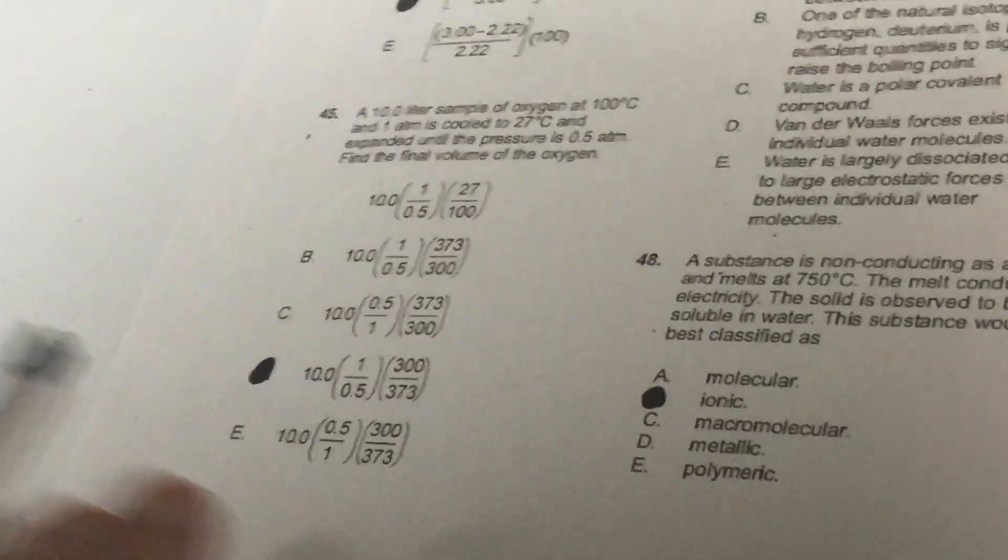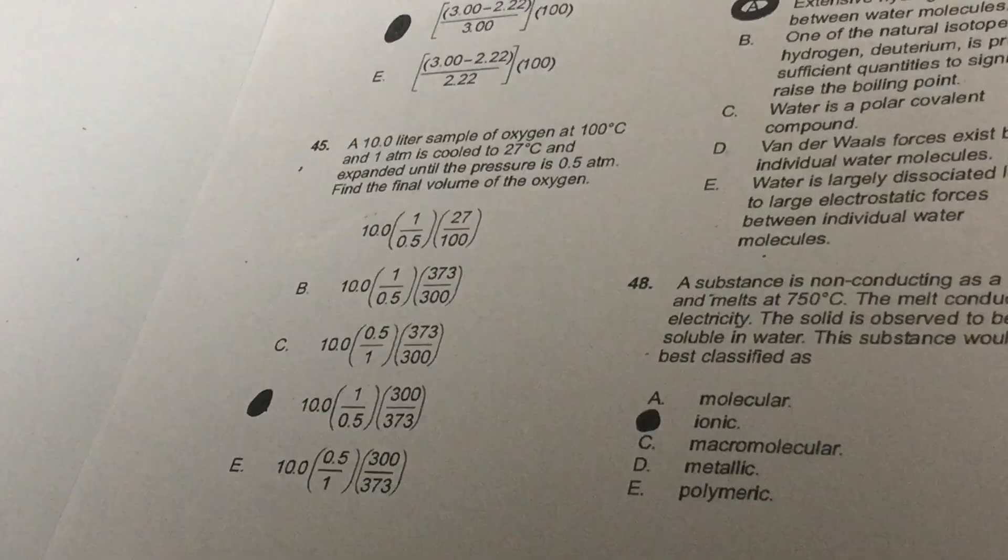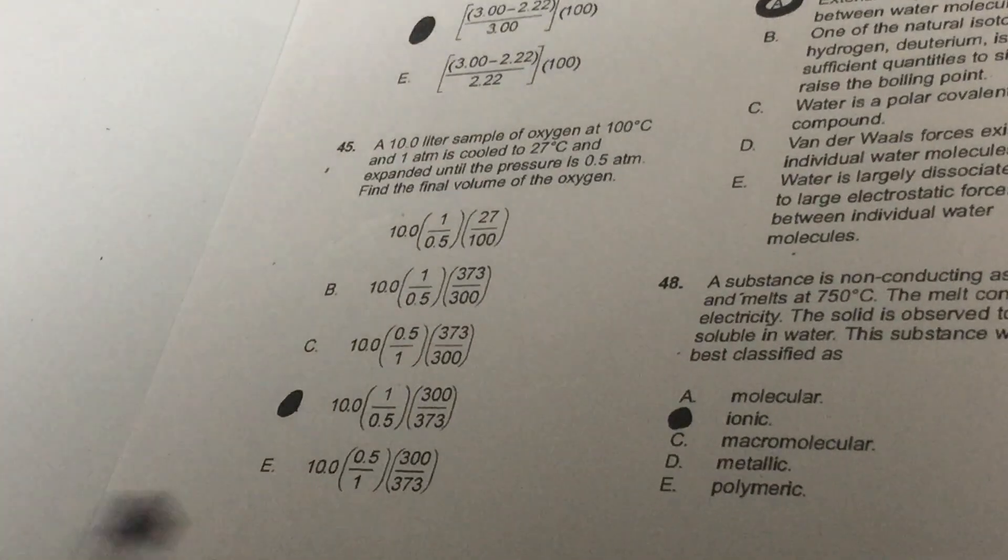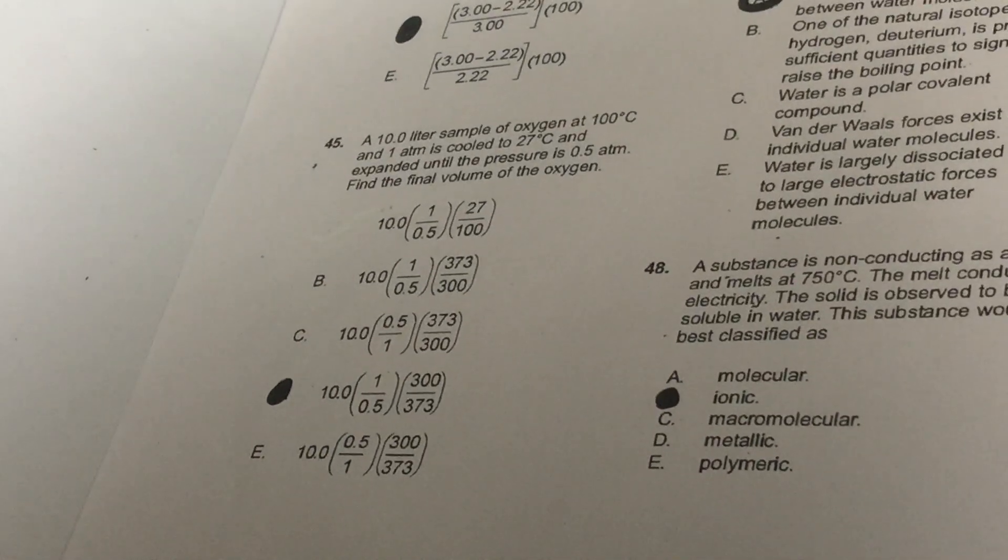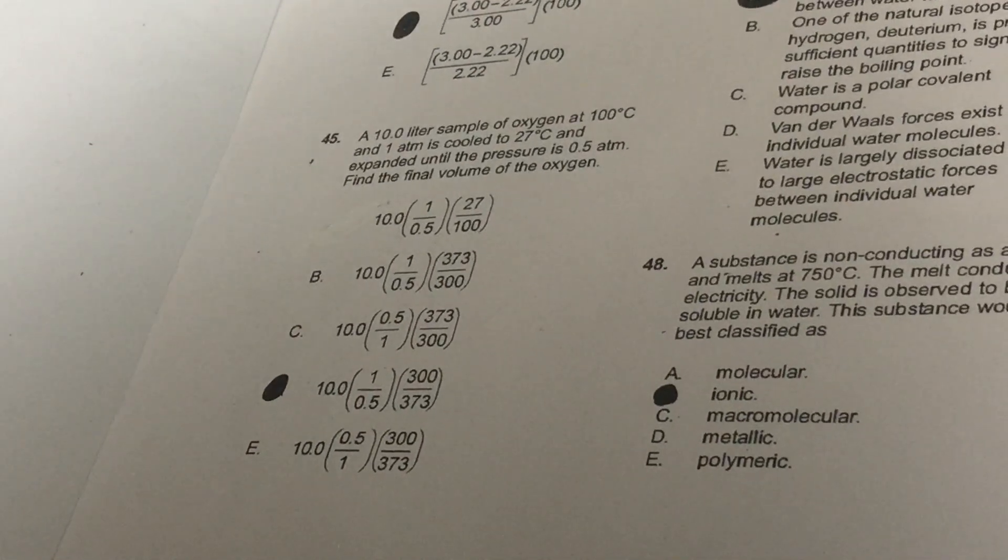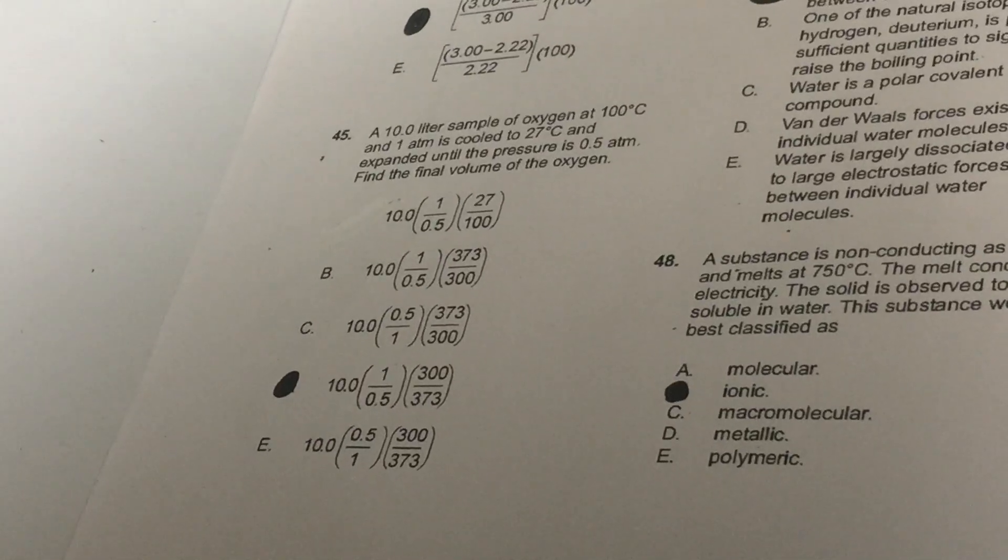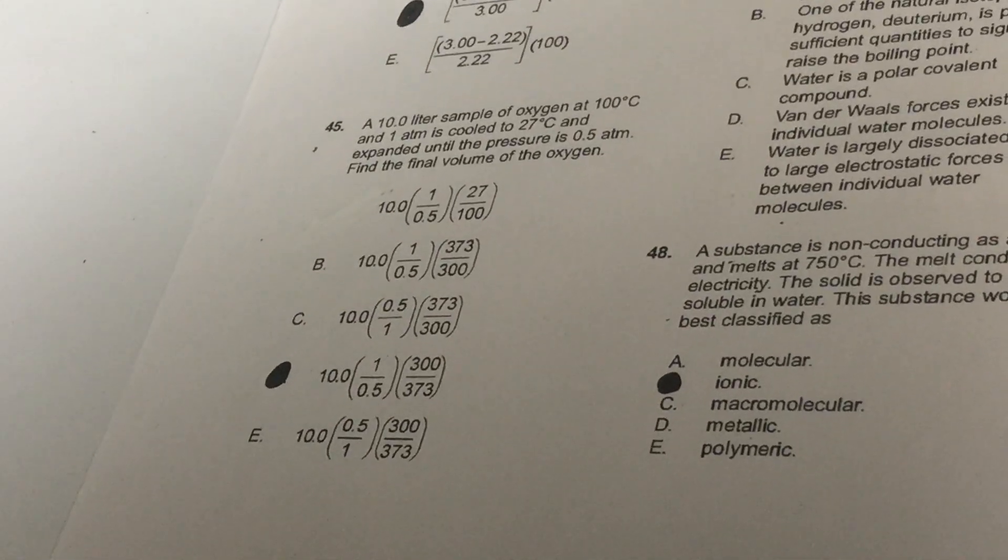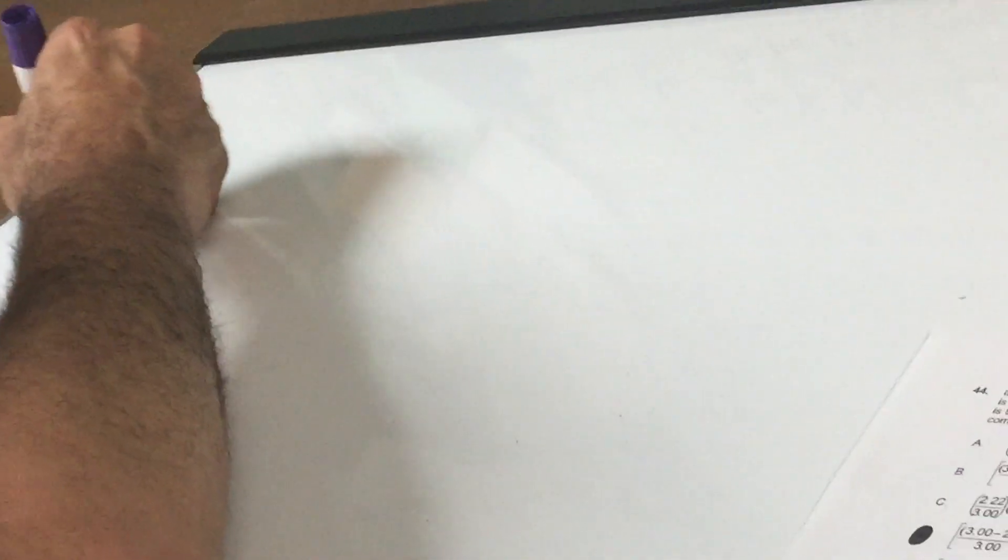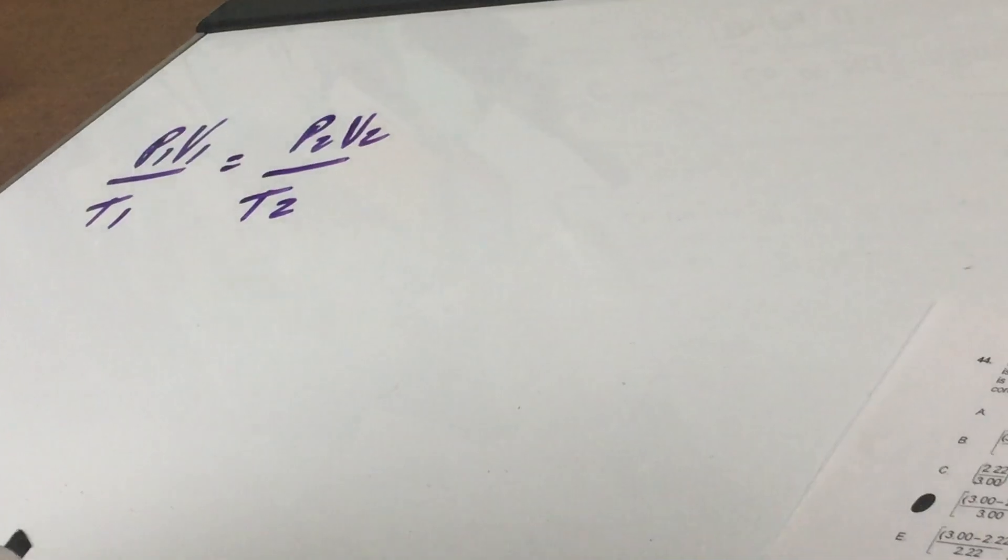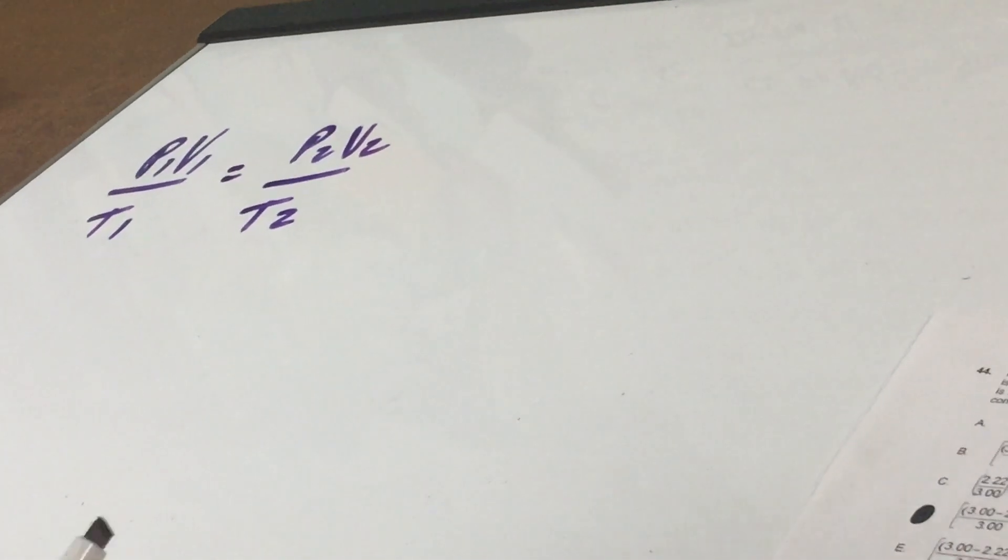Problem number 45 is a surefire question. It says we have a 10 liter sample of oxygen at a hundred Celsius and one atmosphere. And we're going to cool it to 27 Celsius and expand it until the pressure is 0.5 atmospheres. Find the final volume of the oxygen. To do any of these problems, we use what's called the combined law. P1, V1, T1 equals P2, V2, T2.